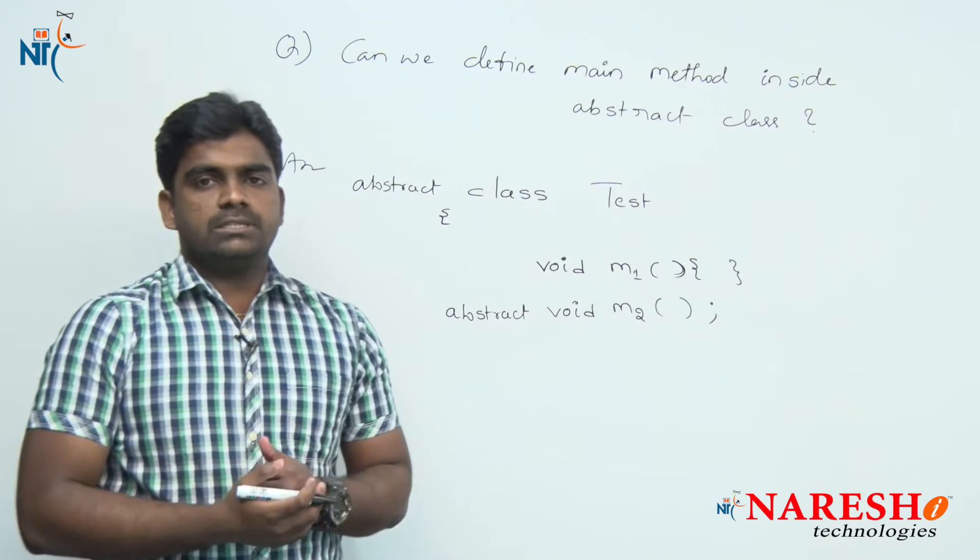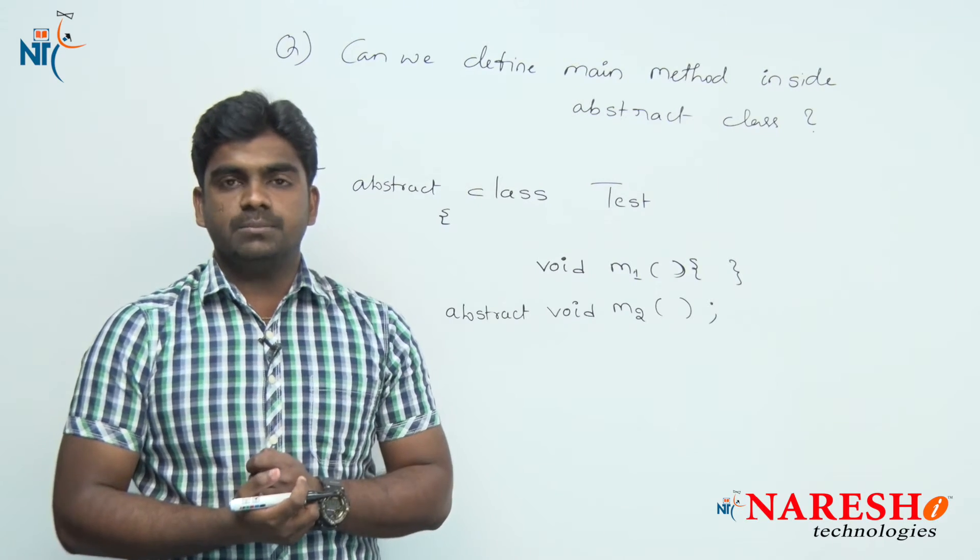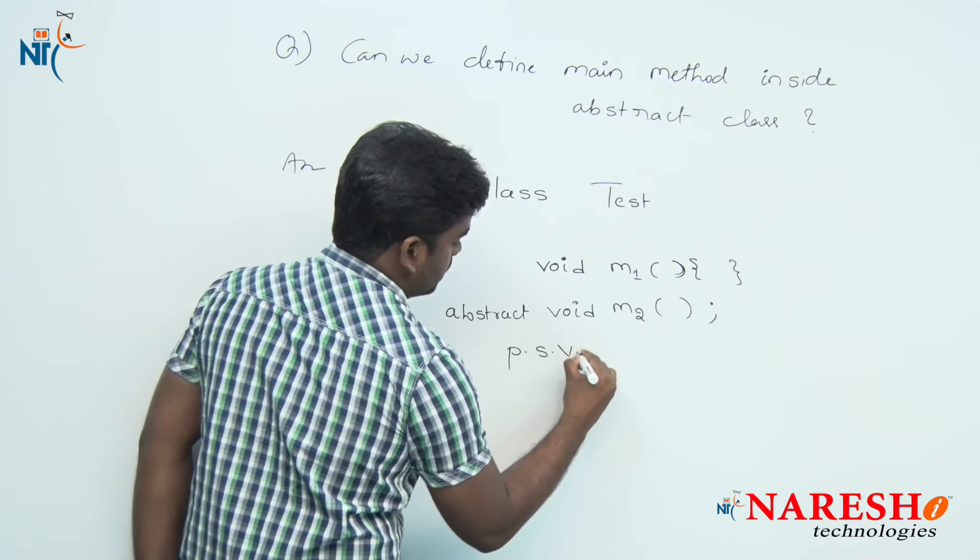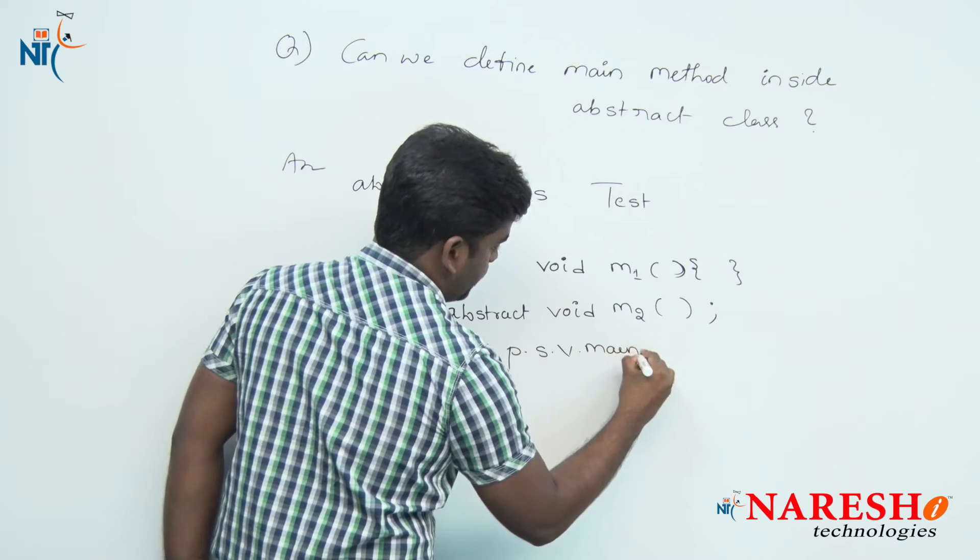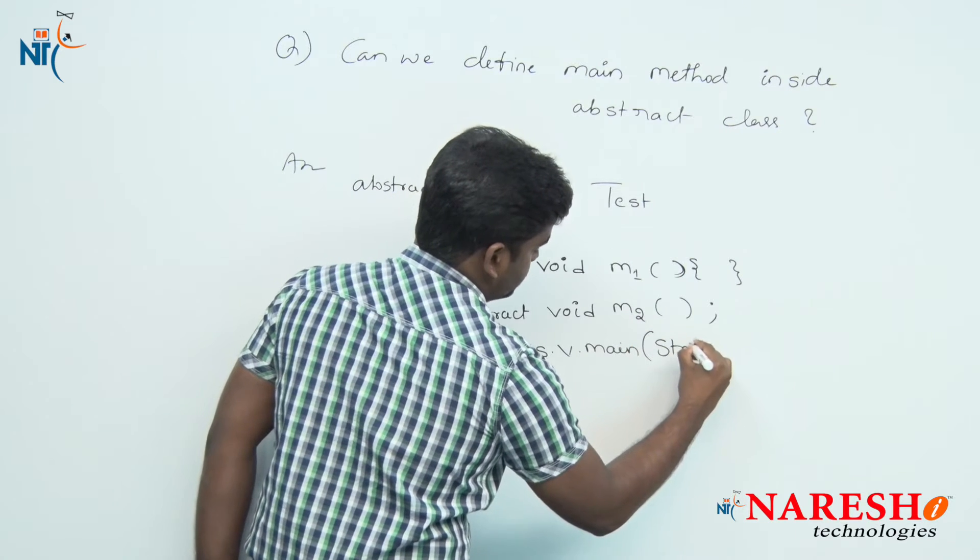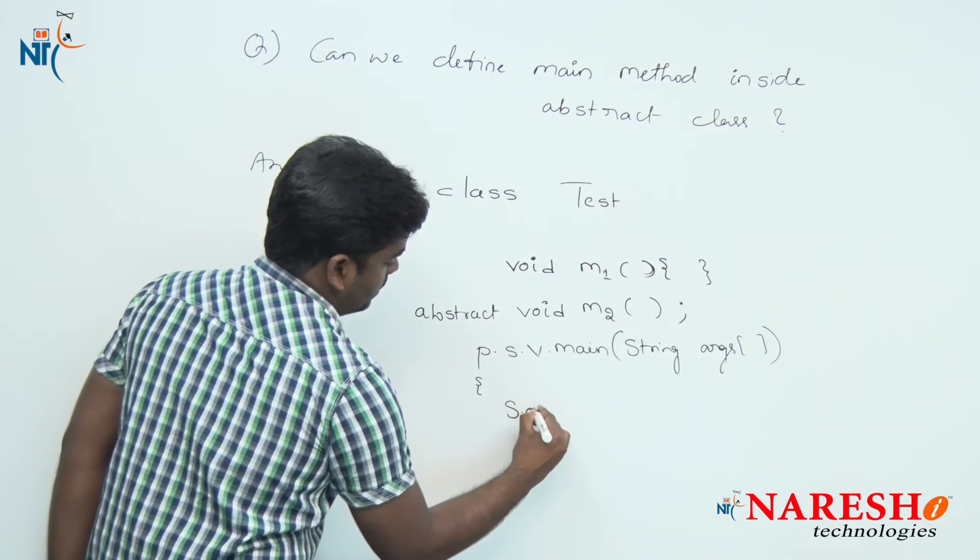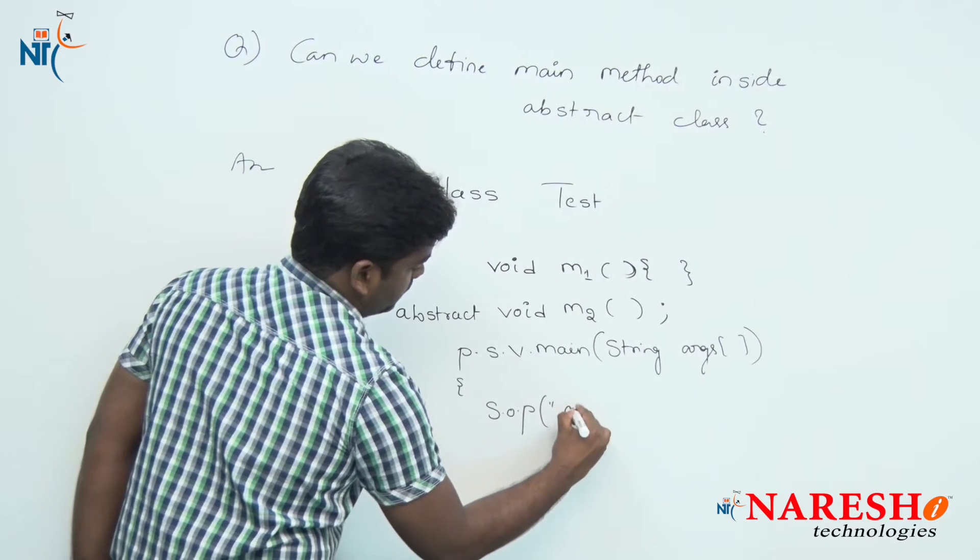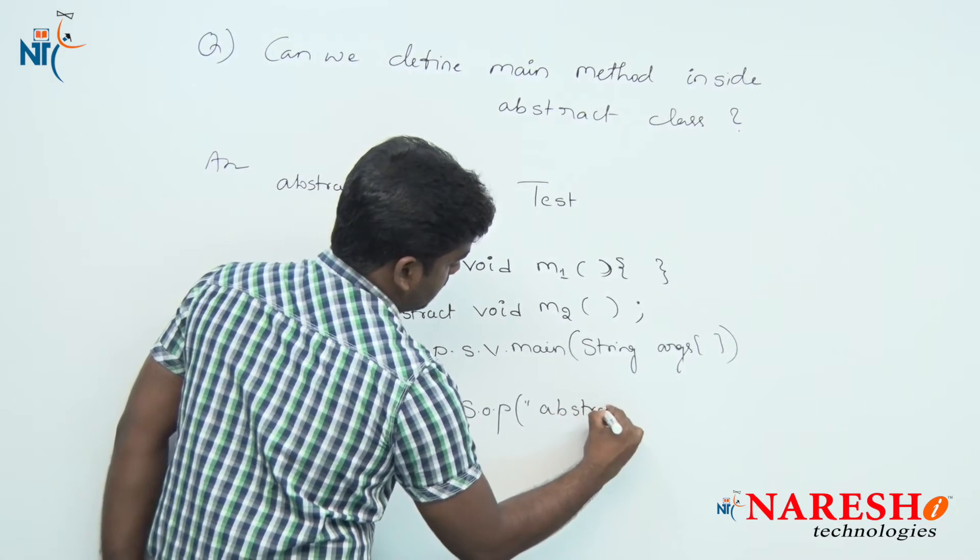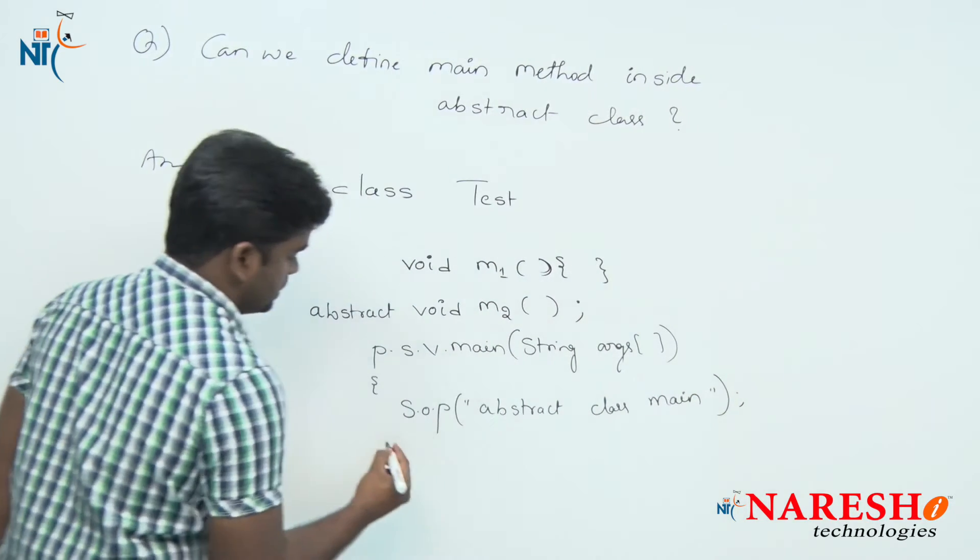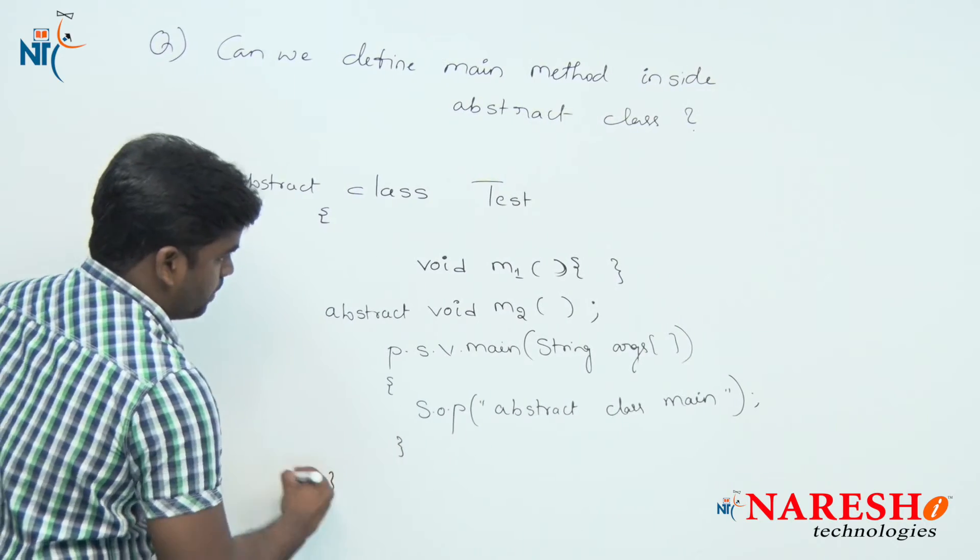But now, the question is: can we define main method inside the abstract class? Here: public static void main, String args, and inside we are writing System.out.println 'abstract class main method'.